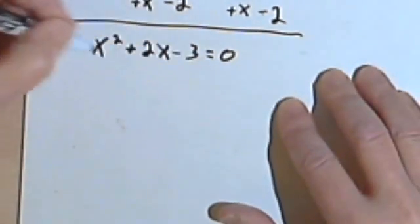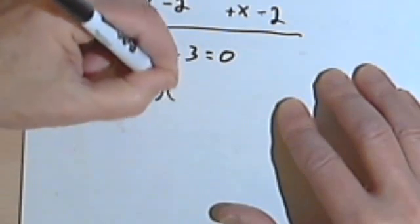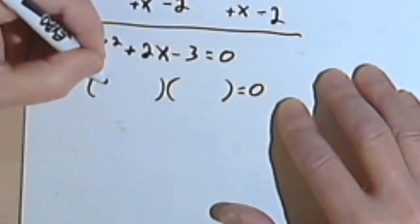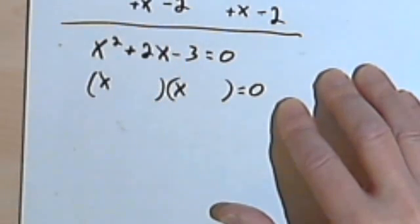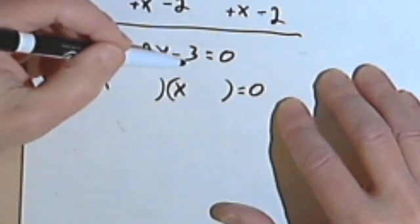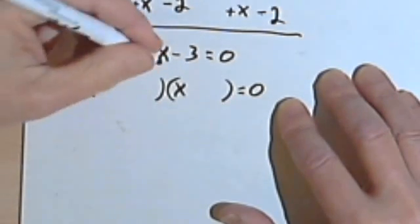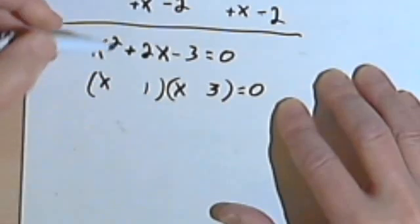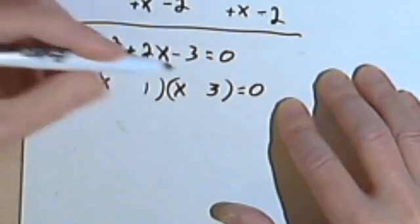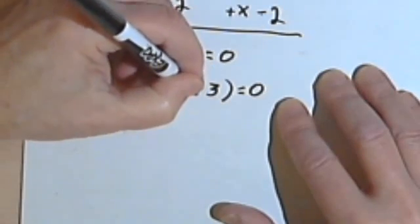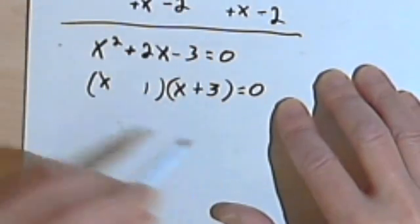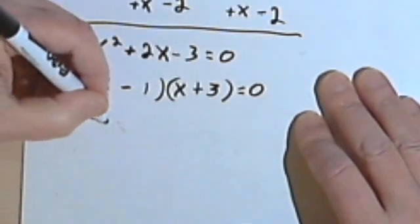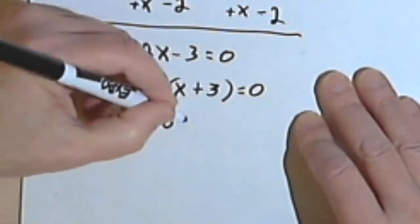And now I'll factor this quadratic expression. So since it begins with x squared, I know that my binomials are both going to begin with x. And the last thing I have here is a negative 3. And the only way I know to make a 3 is a 1 and a 3. And that was negative. So one of these two numbers must be negative. The number in the middle is positive 2. So I'm gonna give the positive sign to the larger of those two numbers. And I'm gonna end up with x minus 1 times x plus 3. And then I'll just set both of these binomials equal to zero.